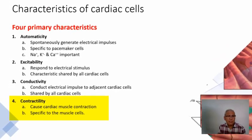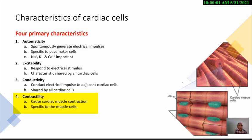Lastly, contractility is specific to the muscle cells. Once the muscle cells receive a stimulus, they are going to contract or shorten, allowing the heart to eject blood to all parts of the body. So these are all the characteristics of cardiac cells.